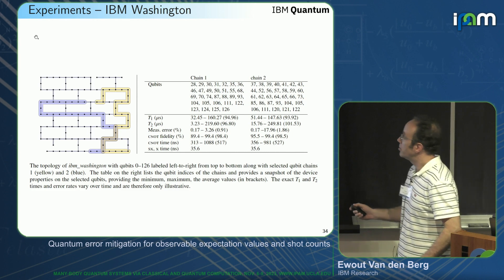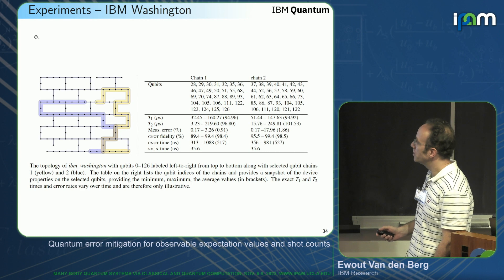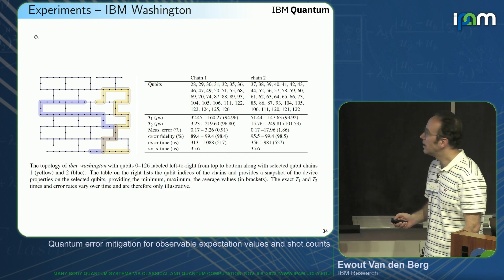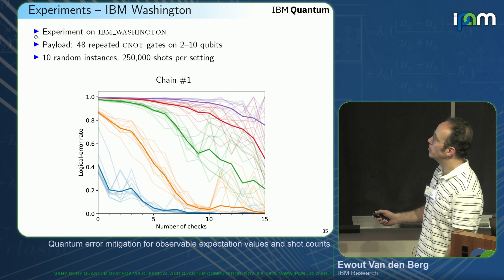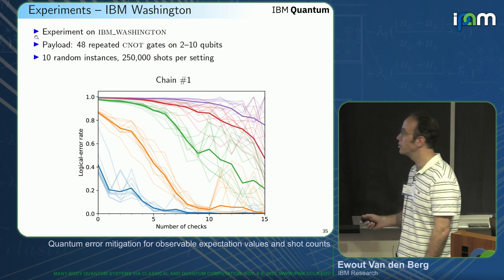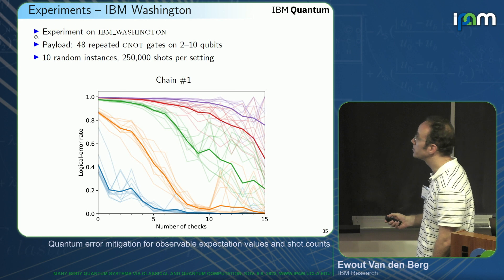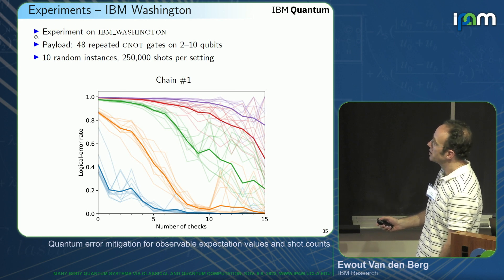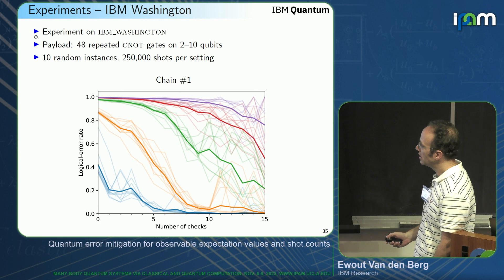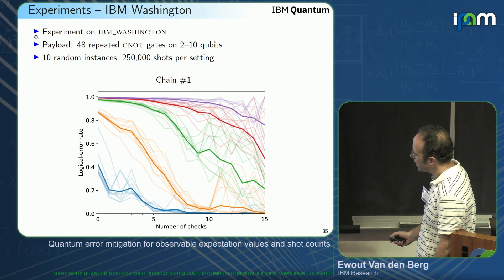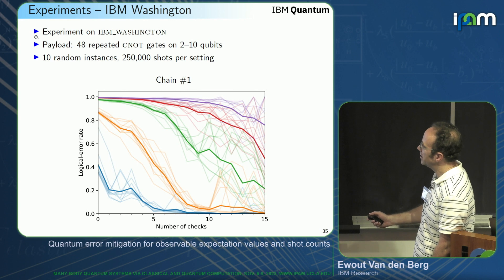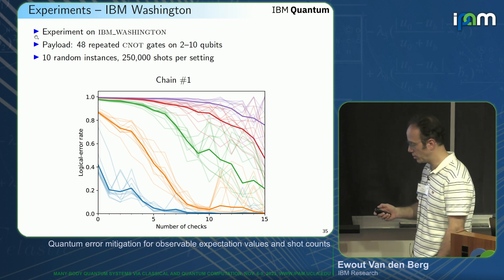Some experiments on IBM Washington: we select two chains of qubits using linear nearest-neighbor topology and look at how the technique works. The circuit is very simple — just repeating CNOT gates 48 times, which applies an identity. Ten different instances, Pauli checks selected randomly, and 250,000 shots per setting. As the number of checks increases, for two qubits the logical error rate goes down; for four, six, eight, and even ten qubits, the logical error rate keeps going down.